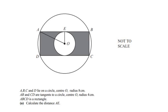Hello and welcome to my channel. In this video we are going to solve an example on mensuration. Points A, B, C, and D lie on a circle, as we can see.